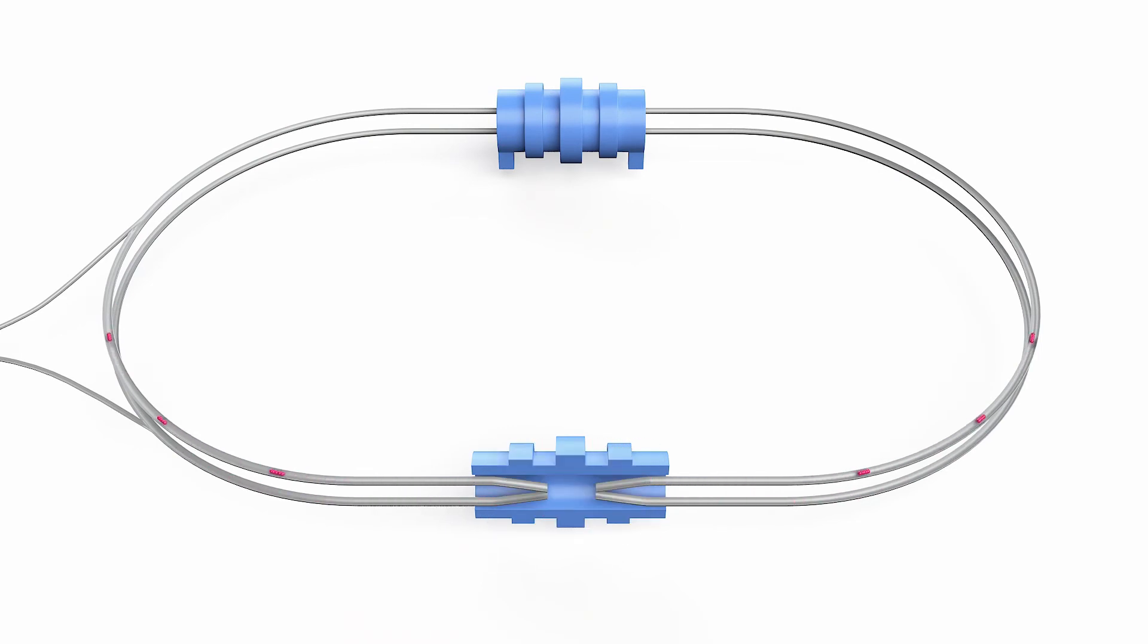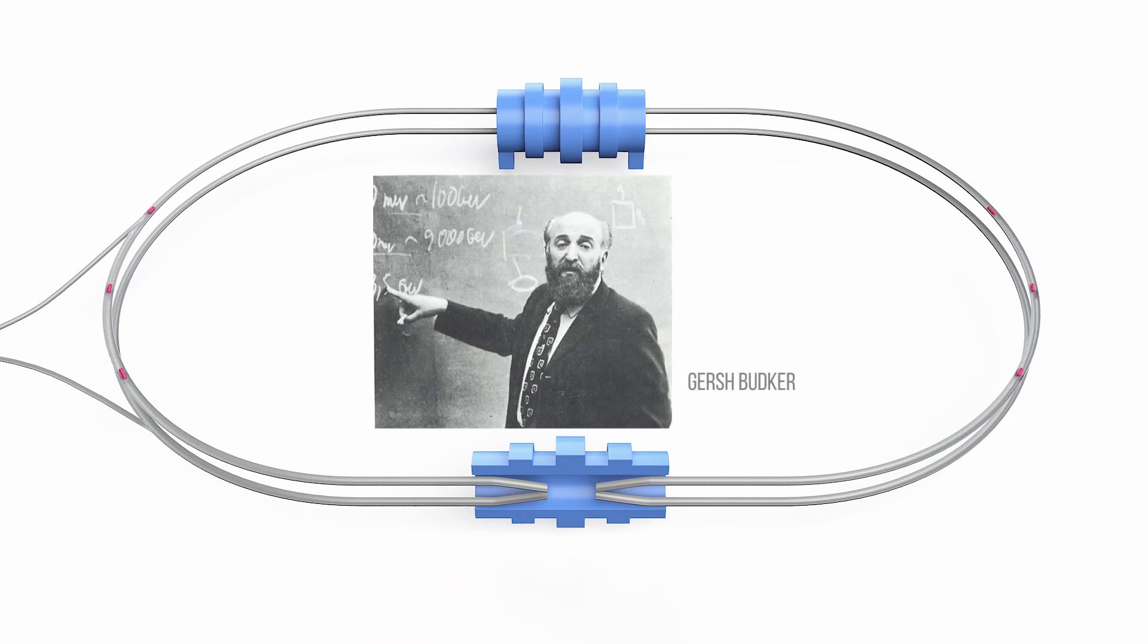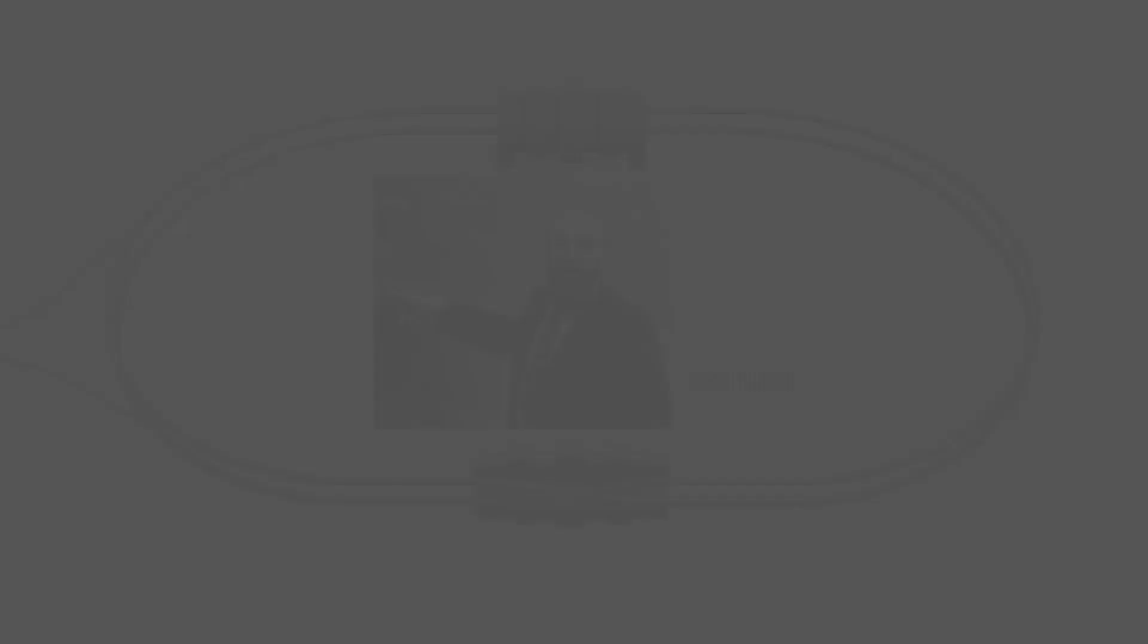In a collider at the points where beams meet, we record the events that occur as a result of a collision. An outstanding contribution to the development of colliders was made by academician Gersh Budker. He proposed the method of electron cooling on which collider operation is based, and in the period from 1964 to 1967, he built a collider in Akademgorodok, academic town of Novosibirsk, where he conducted the first experiments on colliding beams.